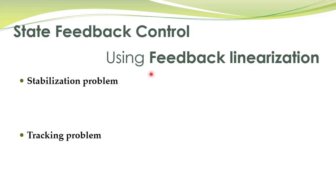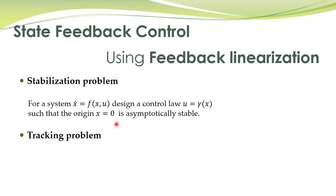You already remember that there are two major control problems: the stabilization problem and the tracking problem. In the stabilization problem, what we want is — for a dynamic system — to design a control law such that the origin of this particular nonlinear system is asymptotically stable. This is called the stabilization problem, and this kind of control is called static control, where gamma is some nonlinear function of state variables.